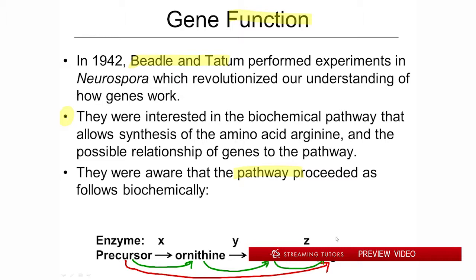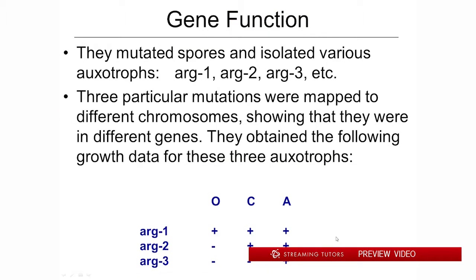Furthermore, every biochemical reaction requires an enzyme to both facilitate and control it. Enzyme X was responsible for converting the precursor into ornithine. Enzyme Y was responsible for the next step, converting ornithine into citrulline. And enzyme Z allows citrulline to be converted into arginine, the end product that's necessary. So, that's what they knew. Then they got into some genetics, combining genetics and biochemistry — still trying to get at gene function.